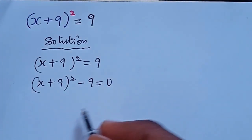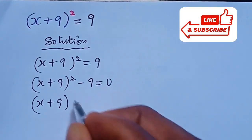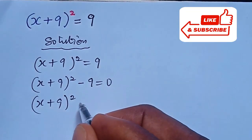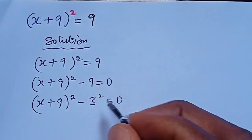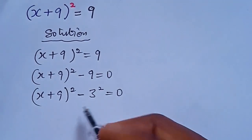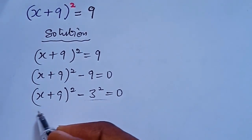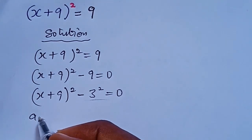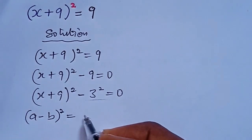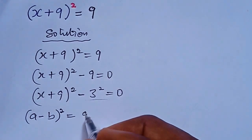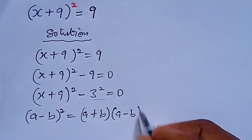From here, we can still rewrite this as x plus 9 in bracket to the power of 2, minus 3 to the power of 2, equal to 0. So over here, this is looking like the difference of 2 squares. And we have the identity to be a minus b to the power of 2, expressed as a plus b into bracket a minus b.